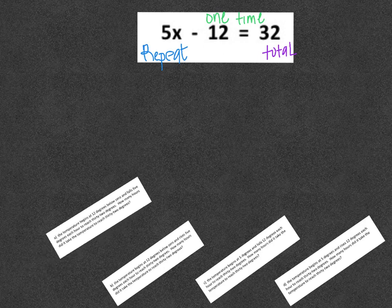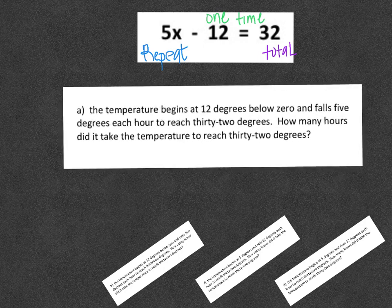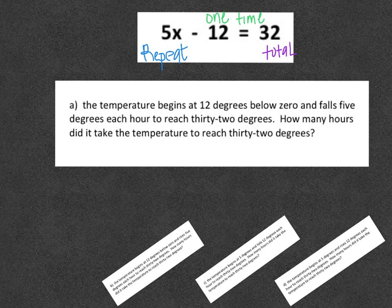We're going to bring up the first story problem. It is letter A. When we read through this, it says the temperature begins at 12 degrees below zero and falls 5 degrees each hour to reach 32 degrees. How many hours did it take the temperature to reach 32 degrees? I'm going to start looking at the numbers that it gives me. It says something begins 12 degrees below zero. So that's going to be my one-time starting amount.